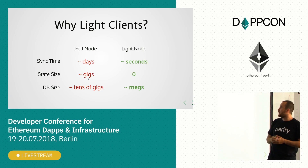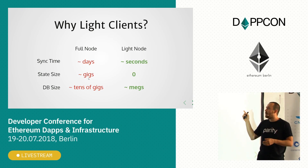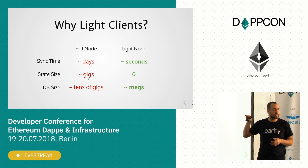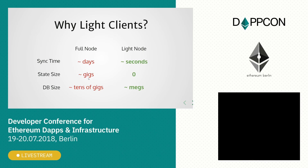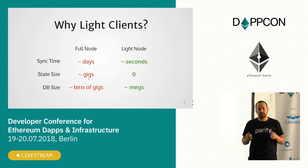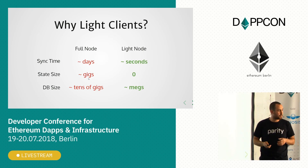A light node, on the other hand, you can sync in seconds. State size is actually zero — completely zero. And the database size, the entire database that we store, is in megabytes.